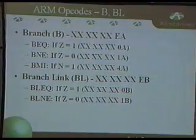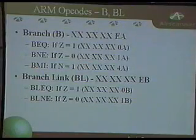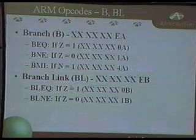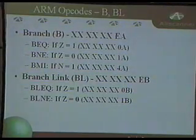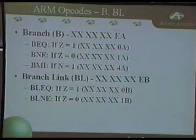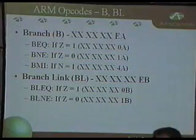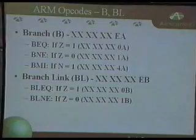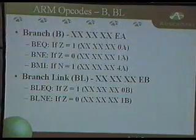The branch opcode controls program flow — it bounces execution to another address. Branch with Link is used for subroutines: it bounces out and then bounces back. The Branch Equal (BEQ) is only executed if the Z status flag is set to one. Branch Not Equal (BNE) executes if Z is set to zero. I've listed part of the hex so you can see what changes between these variants.